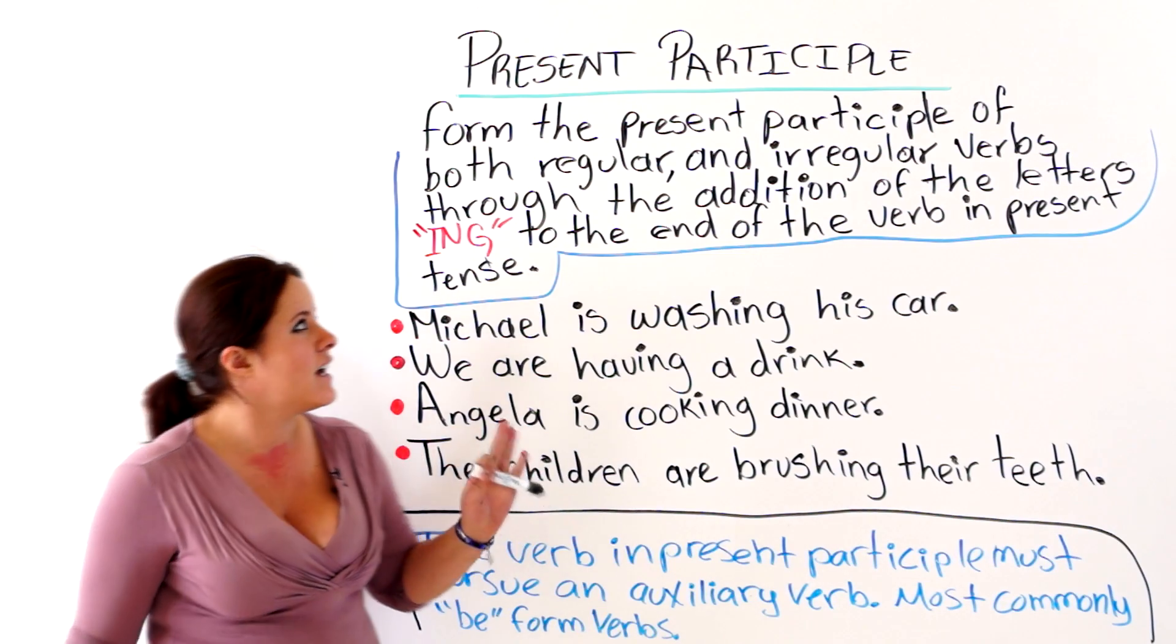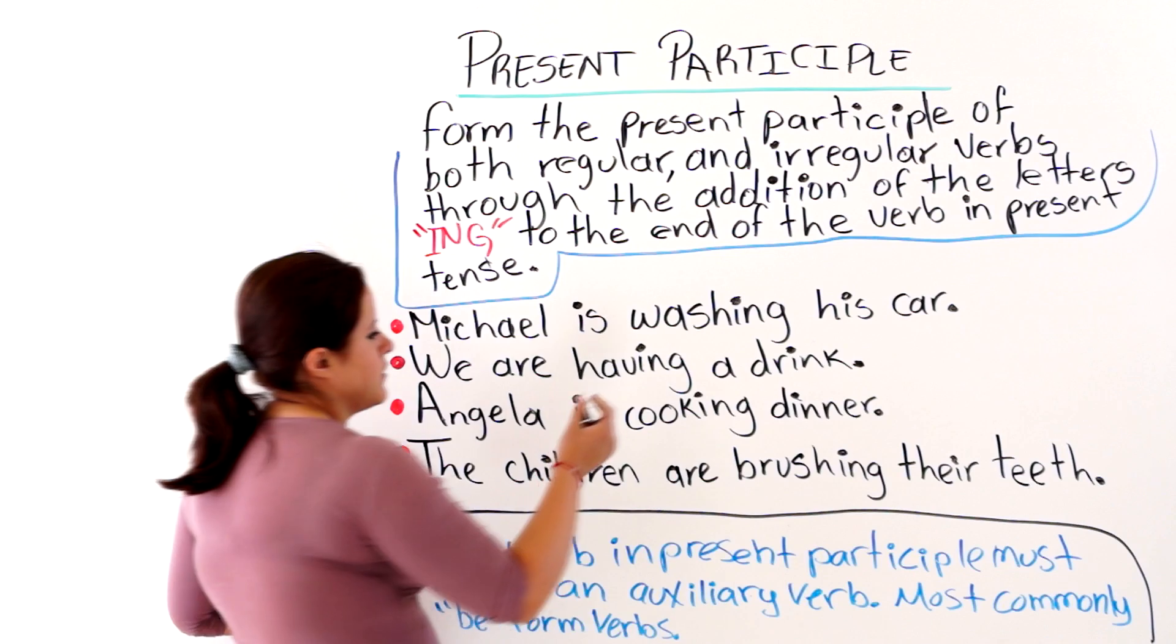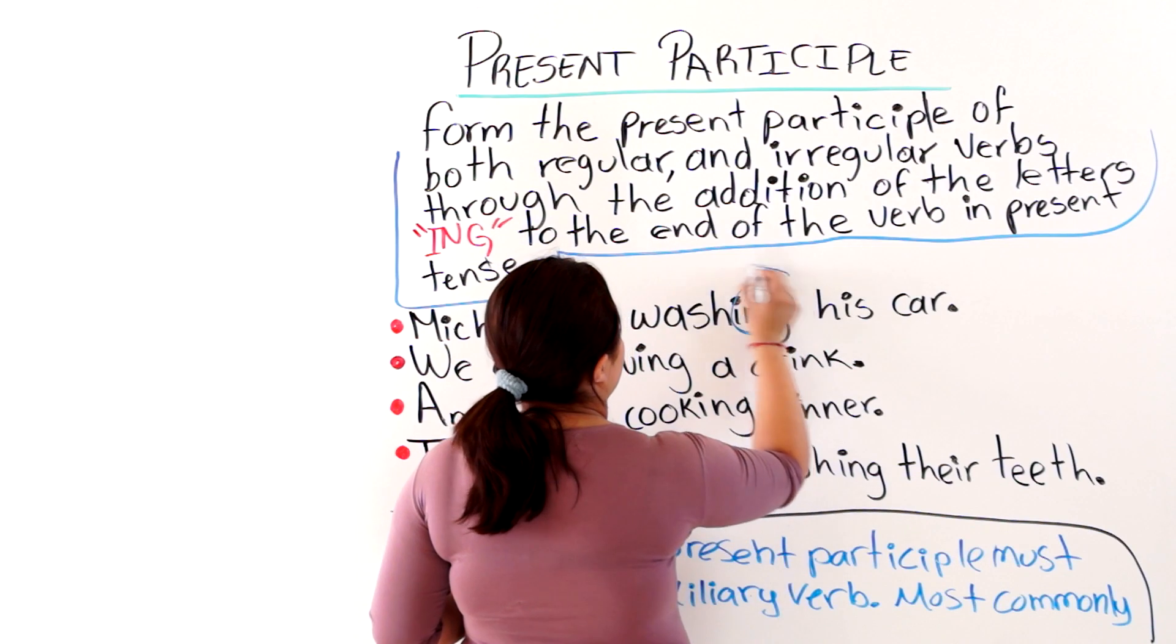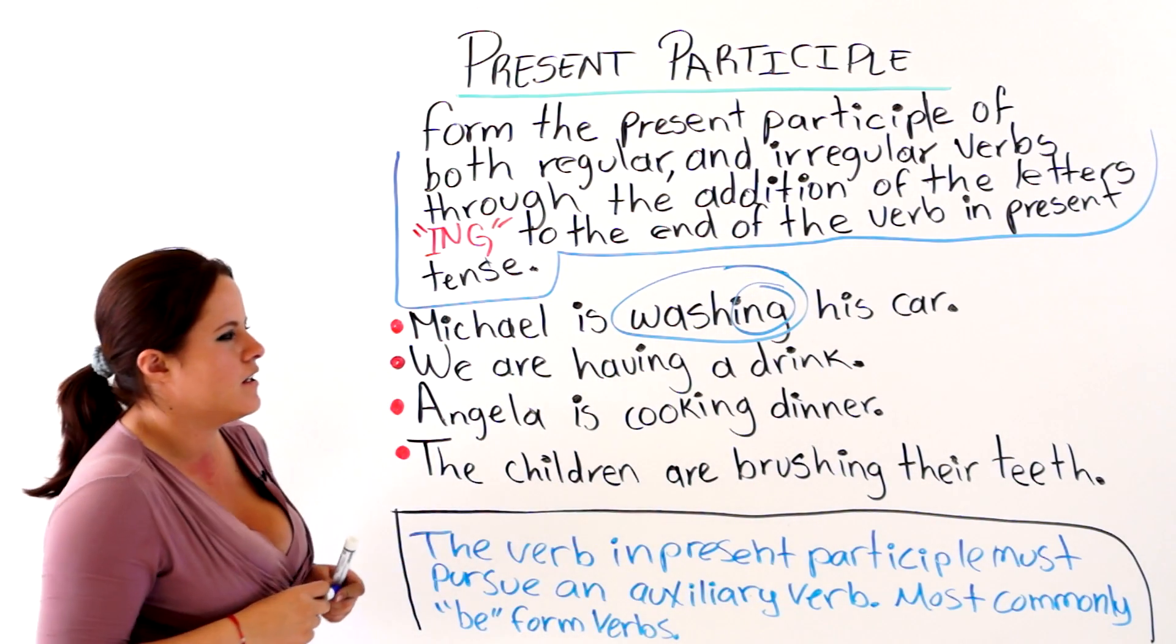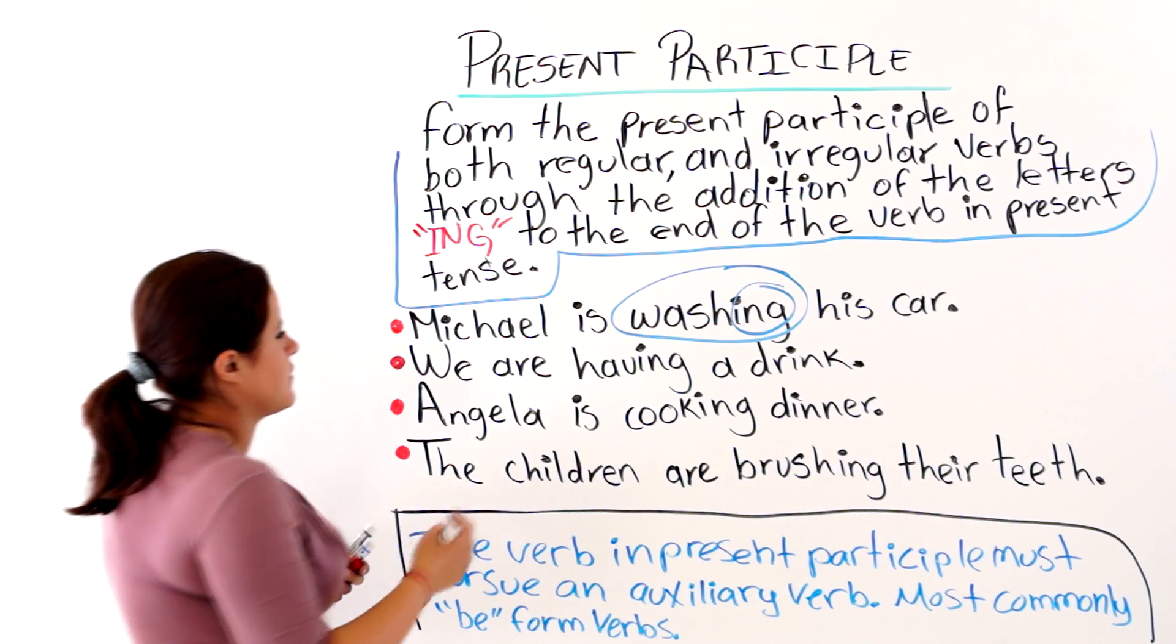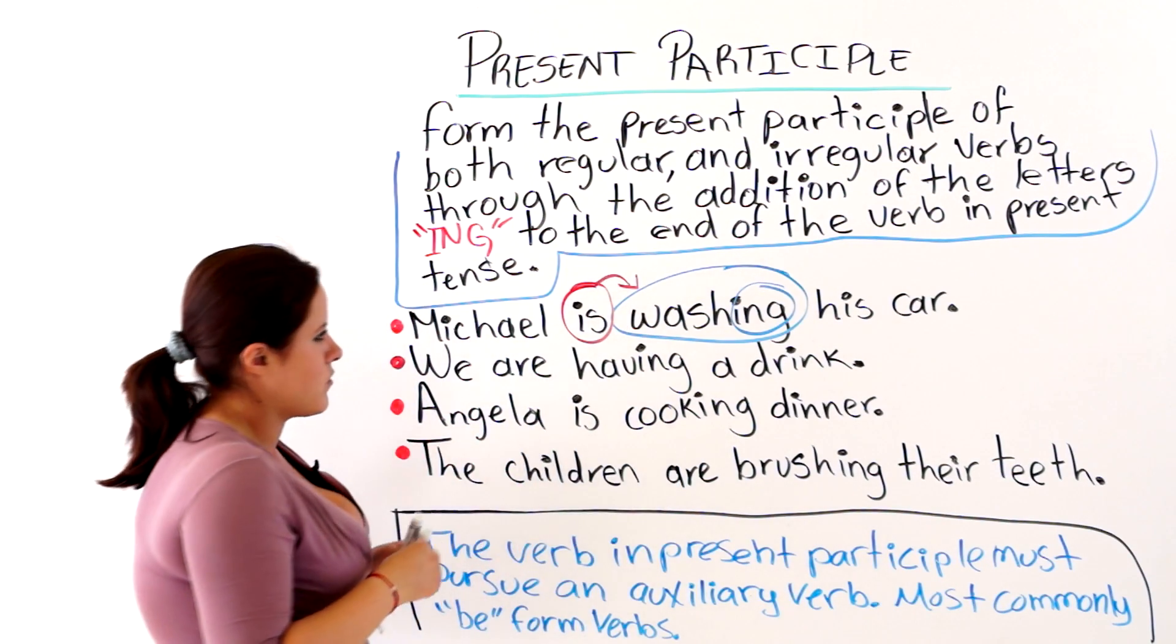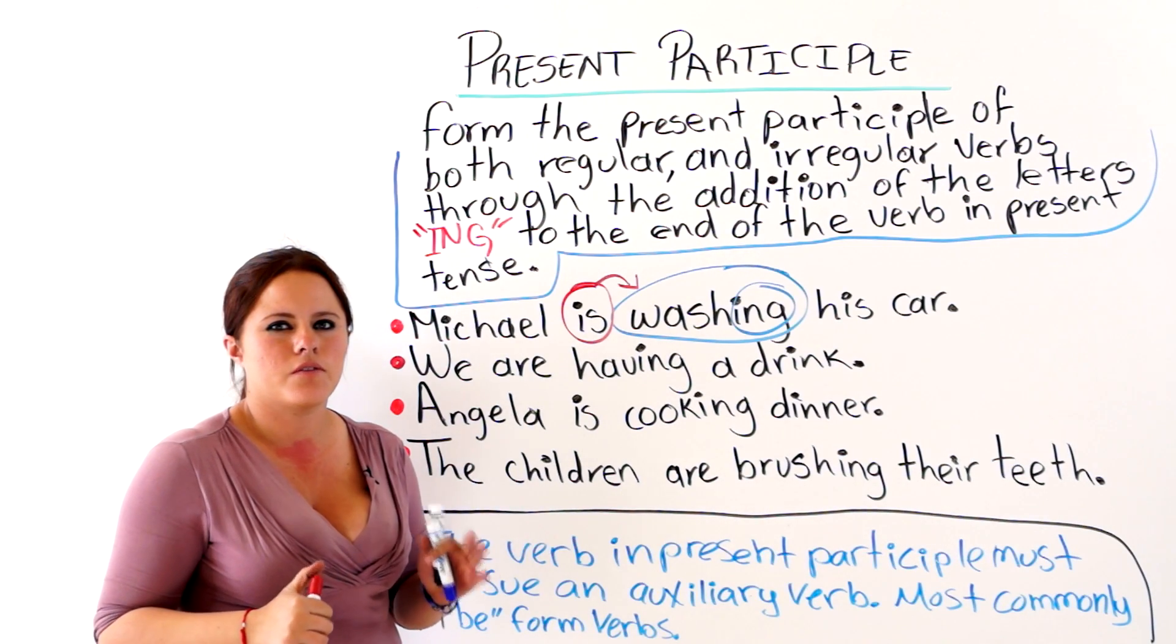So, if you want to have a present participle verb, you will simply add an ing at the end. And before this verb, this present participle verb, you will have to have an auxiliary verb, or one of the be forms of the verb.